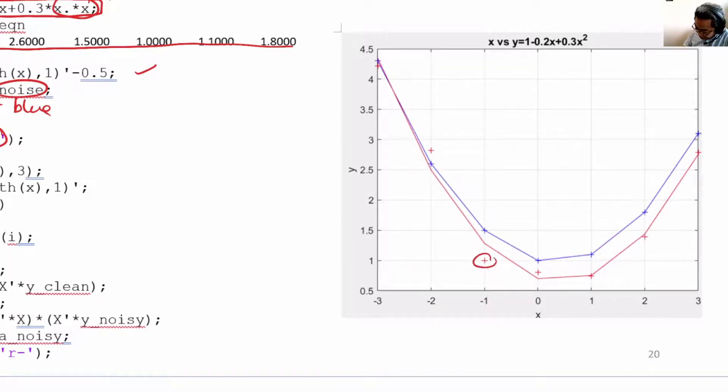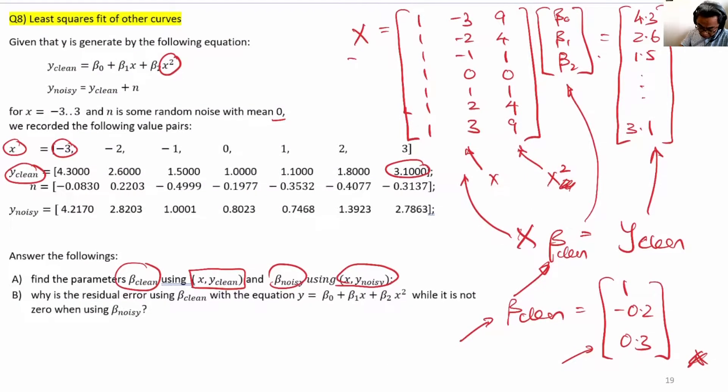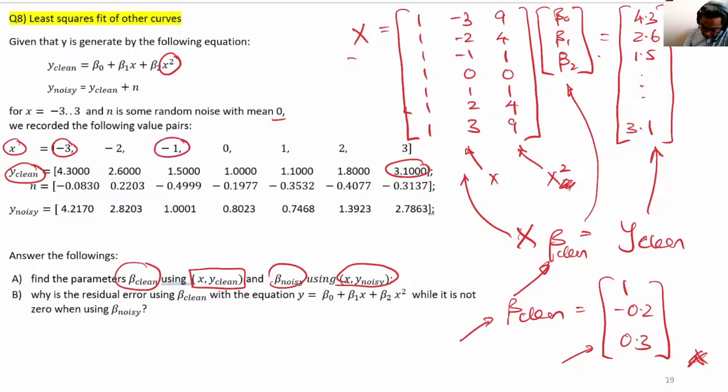What about the red one? For example, this is x equals minus one; the y is one. If you look at the table later on, you'll realize that x is minus one here, and y is one for the noisy case.